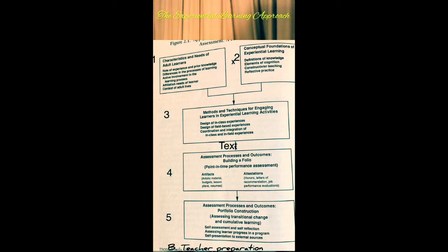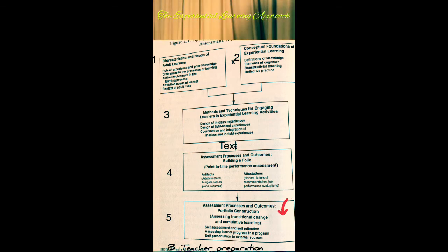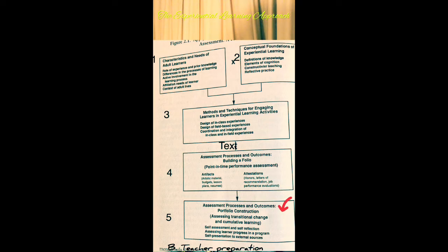For Box four, teacher preparation in terms of assessment processes and outcomes includes using videos of instructional interactions with students completed at various points in the program, and documenting peer reviews of classroom data collection activities. For Box five — portfolio construction — self-representation portfolios promote the teacher as a team player, skill technician in differentiated instructional programming, and student advocate. Self-reflection portfolios enhance a teacher's ability to assess current strengths and future professional development needs.